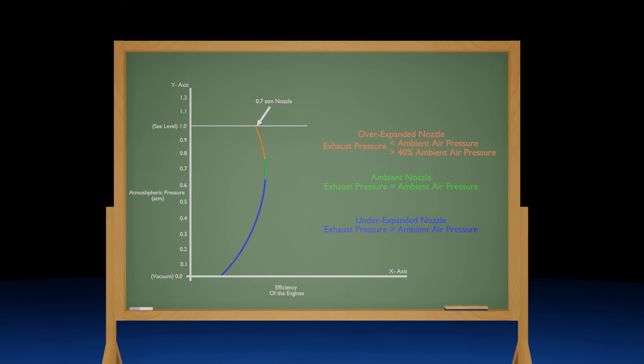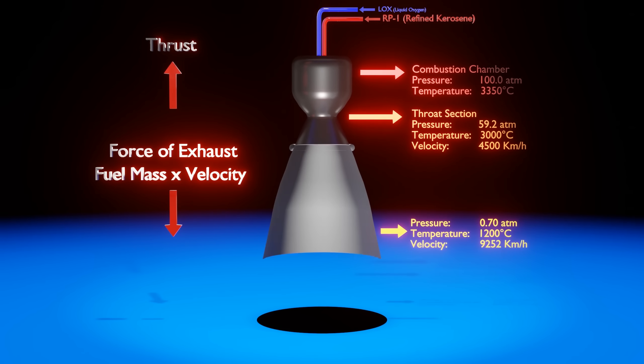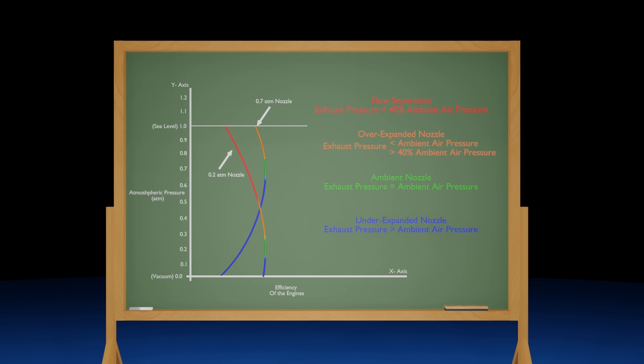Why not design the engine to be more efficient later into its flight in high altitudes by expanding the nozzle size, and converting more thermal energy and pressure into exhaust velocity? Well, there's two reasons why we can't design our engine to operate in lower atmospheric pressure. The first reason is reduced efficiency at lift-off. Remember, the further the exhaust pressure is from the atmospheric pressure, the less efficient the rocket will be. If our engine runs at 0.2 atmospheres, for example, there will be a greater difference in pressures at sea level, and the engine will be more over-expanded.